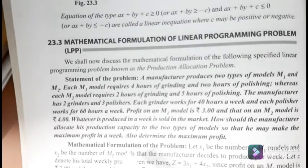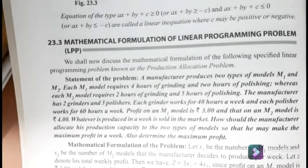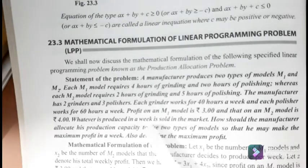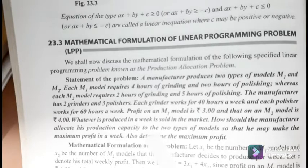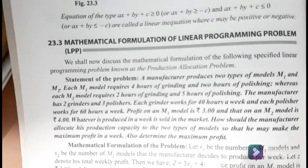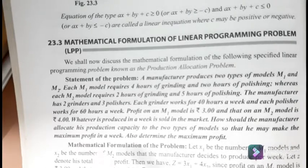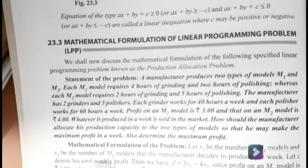By selling model M1 and M2, the manufacturer will get a profit of rupees 3 on M1 and rupees 4 on M2. Whatever is produced in a week is sold in the market — for example, suppose 10 M1 models and 5 M2 models are produced in a week, they are all sold. How should the manufacturer allocate his production capacity to the two types of models to make maximum profit in a week? Also determine the maximum profit.